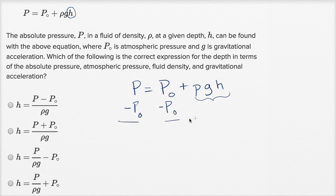And then on the left-hand side, I have capital P minus capital P sub zero is equal to - those are going to cancel out - you're going to have rho times g times h.